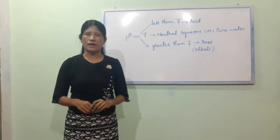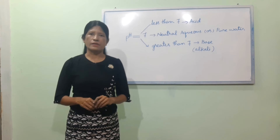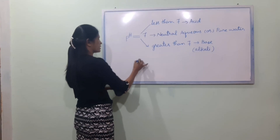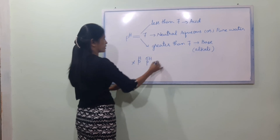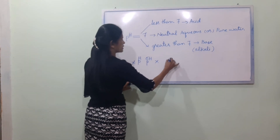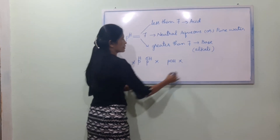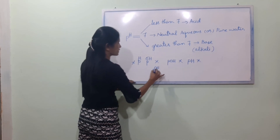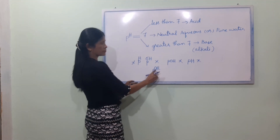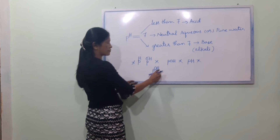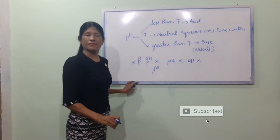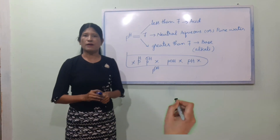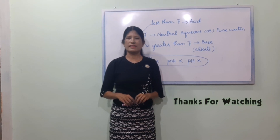If the pH is greater than 7, the solution is basic. pH = 7 is neutral for pure water. See you next lesson. Bye.